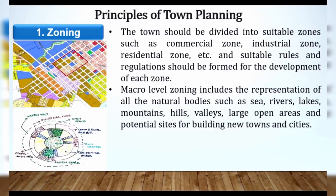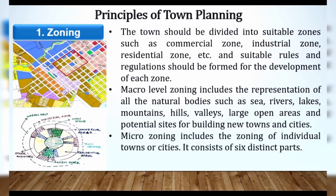Macro level zoning mein kya kya include honga: zoning matlab kya — poora area divide kar dena. Macro level zoning mein all natural bodies especially represent kiye jaate hain — sea, river, lakes, mountains, hills, valleys, large open areas, and potential sites for the building of new towns and cities. Aisi feasible sites jo new towns or cities ke liye use ho sakti hain, woh bhi macro level zoning mein include karenge. Phir micro level mein kya aayega?